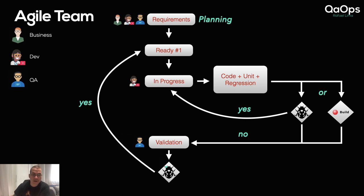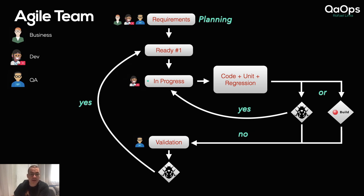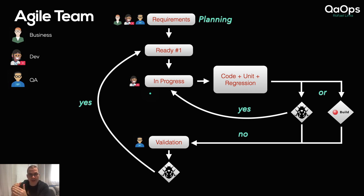If an issue was found, we'd go back to the beginning — the story would be kicked back because it didn't meet the requirements. This depends on the process; I've worked with teams that kick back the story from scratch, and teams that move the story forward and create another story to address what was missing. As we go back to the test pyramid, issues at the base of the pyramid are cheaper to find and resolve.